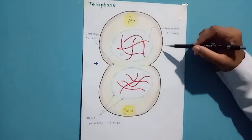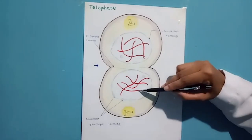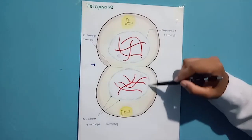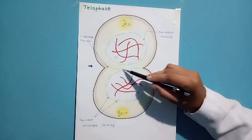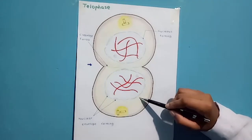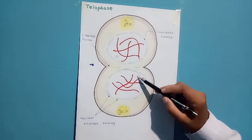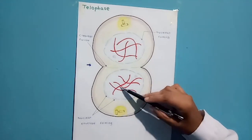After anaphase, telophase occurs. Two daughter nuclei form in the cell. Nuclear envelopes arise from the fragments of the parent cell's nuclear envelope and other portions of the endomembrane system. Nucleoli reappear. The chromosomes become less condensed.